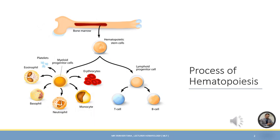The production of WBCs is called leukopoiesis. The production of platelets is called thrombopoiesis, also known as megakaryopoiesis. The production of red blood cells is known as erythropoiesis. Overall, hematopoiesis is defined as the production of all types of blood cells, including their formation, development, maturation, and differentiation.